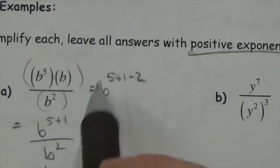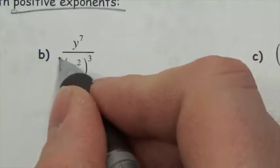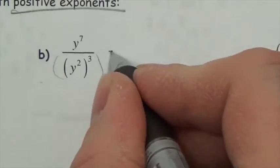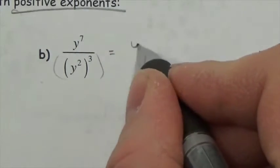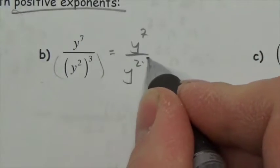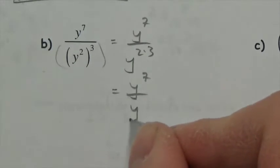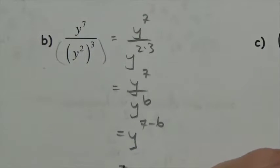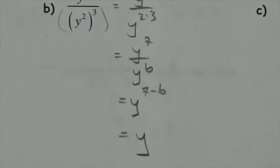For y to the seventh over (y squared) cubed: deal with the power of a power first — y squared cubed gives y to the sixth. Then divide y to the seventh by y to the sixth: 7 minus 6 gives y to the first, which is just y.